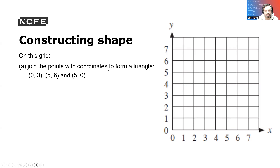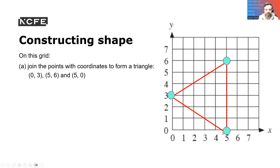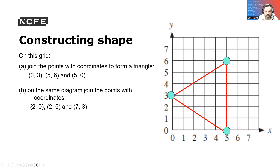Constructing shapes: join the points to the coordinates for a triangle. So we're going to go along the corridor — there and there, so that would be the first one. We would then do five six, along the corridor and up the stairs, there. We can now add the lines: from here to there, we can now go down from there to there, and from there to there — there we go and there's our shape. On the same diagram, join the points with the coordinates two two, four two, two zero, two to six, and seven to three — and again we can join those lines up. There we go — what a lovely star.